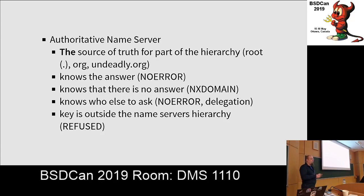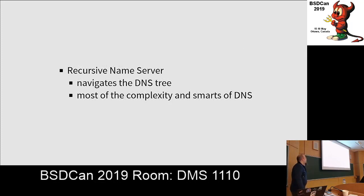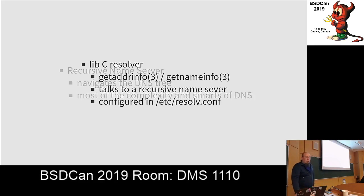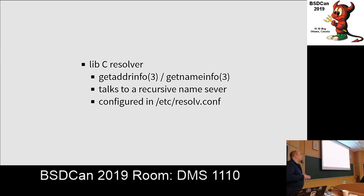The authoritative name server is the source of truth for a particular part of the hierarchy, like the root zone or the .org zone. This server either knows the answer to the question, knows that there is no answer, knows there might be an answer somewhere else and says 'go over there, ask them,' or it knows the question isn't its concern and refuses to answer. Another piece is the recursive name server — these are the complicated parts. They know how to navigate this hierarchy, this tree. On your laptop, you have the C library, which uses getaddrinfo and gethostbyname to talk to a recursive name server, which is configured in /etc/resolv.conf.